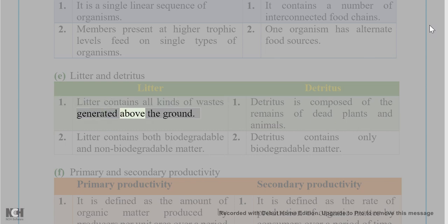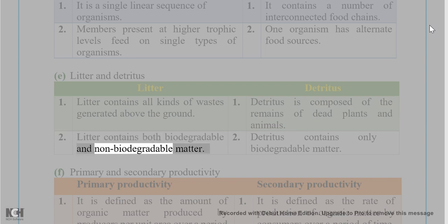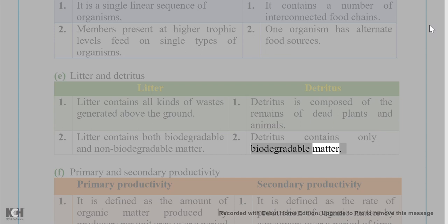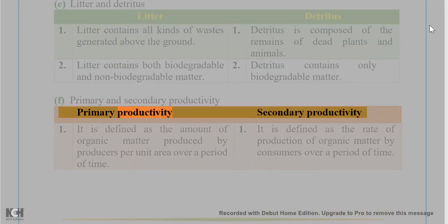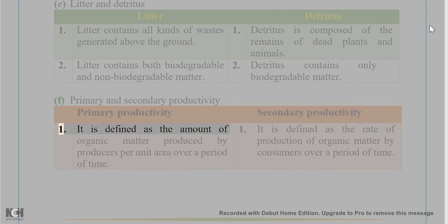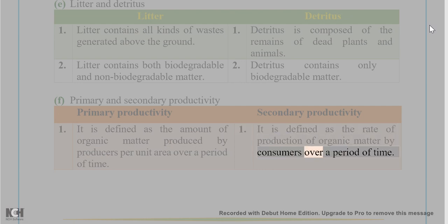Answer 6(E): Litter vs. Detritus. Litter contains all kinds of wastes generated above the ground, including both biodegradable and non-biodegradable matter. Detritus is composed of the remains of dead plants and animals and contains only biodegradable matter. Answer 6(F): Primary vs. Secondary Productivity. Primary productivity is the amount of organic matter produced by producers per unit area over a period of time. Secondary productivity is the rate of production of organic matter by consumers over a period of time.